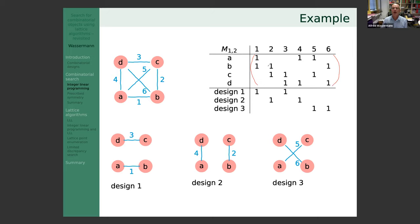From this incidence matrix, we get design 1 by selecting columns 1 and 4, design 2 by selecting columns 2 and 3, and design 3 by selecting columns 5 and 6. Selecting design 1, for example, means those two column entries sum to give the right-hand side of all ones.